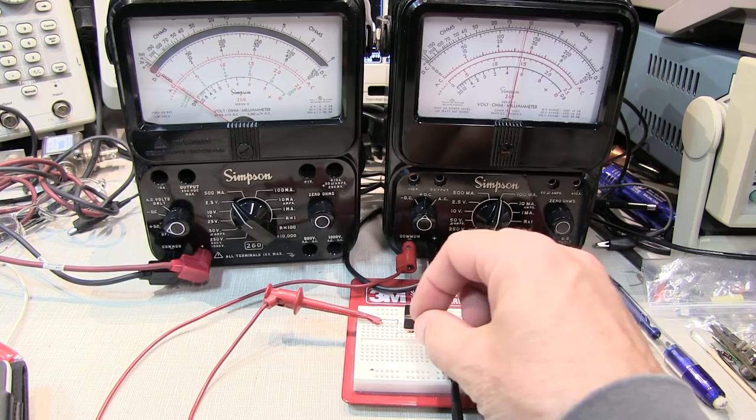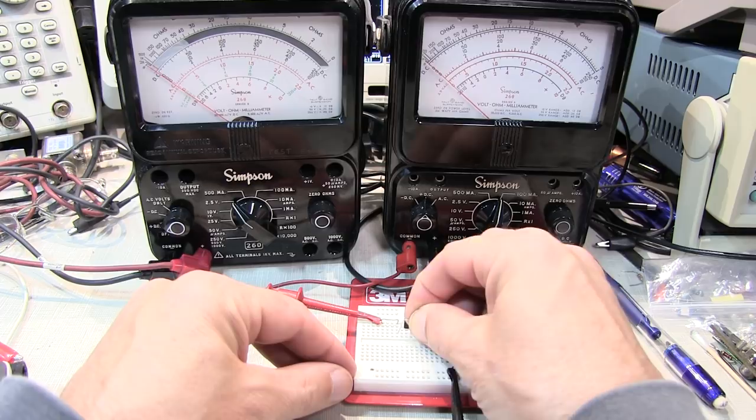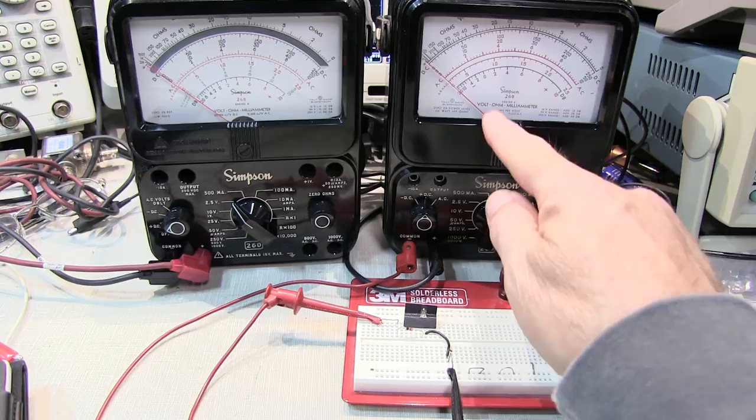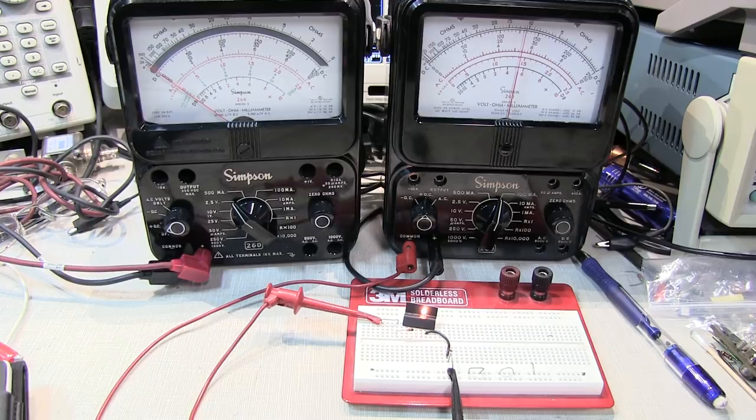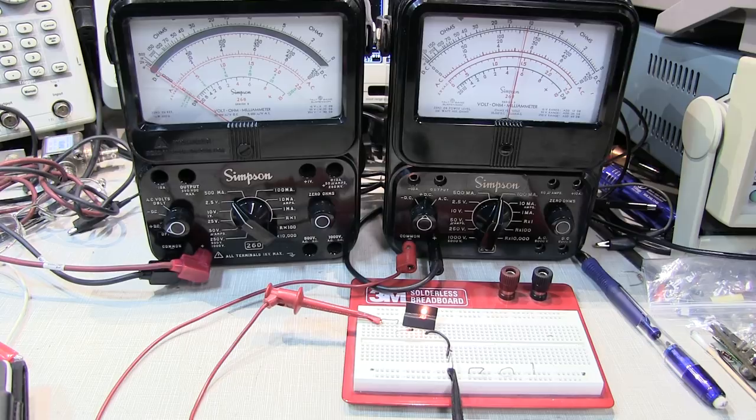If we turn the diode around, we'll pull it out and flip it back in to the circuit. Now it's in the reverse direction and no current flow and the bulb is out. Turn it back to the forward direction again and the bulb is lit back up. So that's your basic ideal diode behavior. Blocks current in one direction and lets it flow in the other.